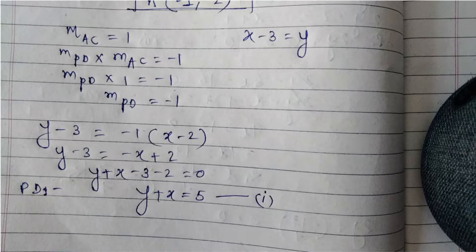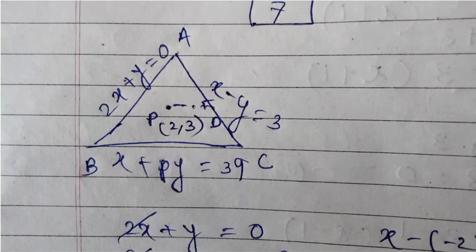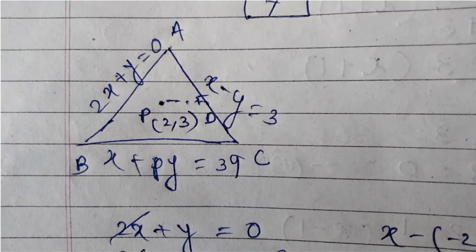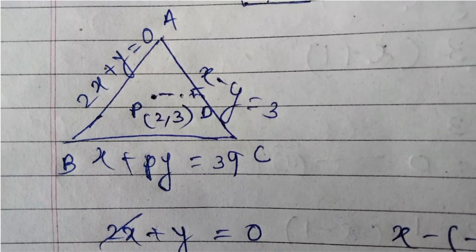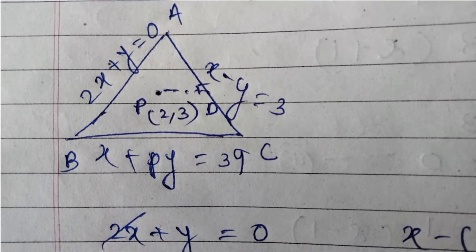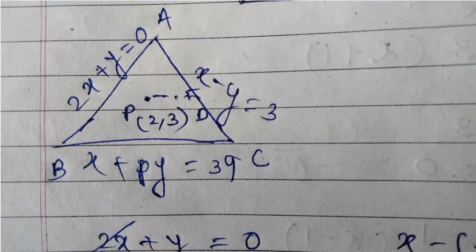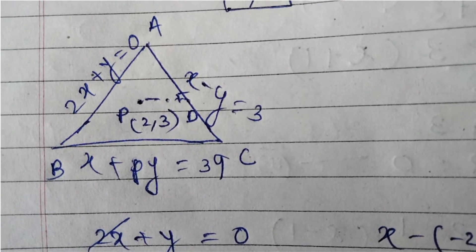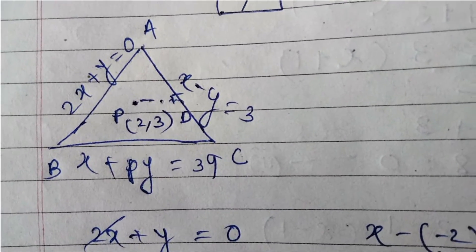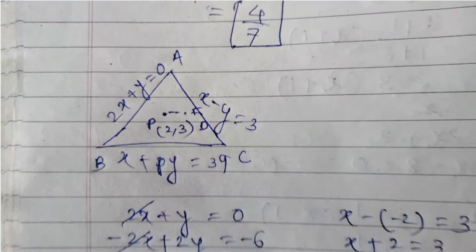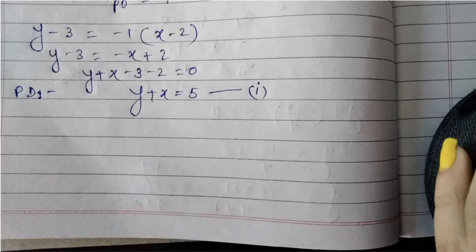PD is a perpendicular bisector of AC. To find the coordinates of C, we use the image (reflection) formula. Since PD is perpendicular to AC and passes through D, the midpoint, we have AD equals DC. Therefore C is the image of A reflected through the line PD, and we can use the image formula to find C.